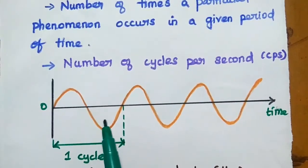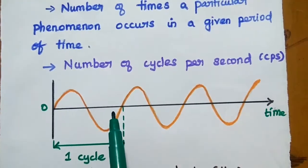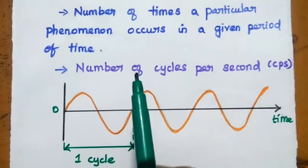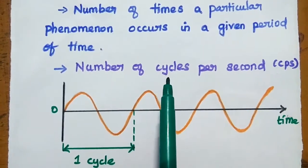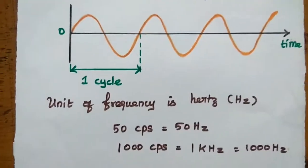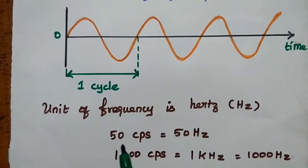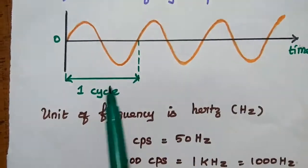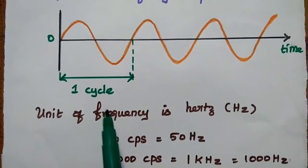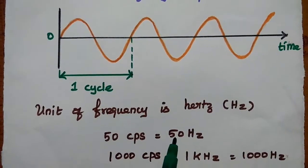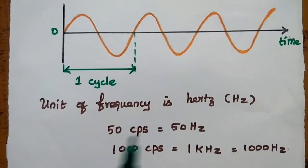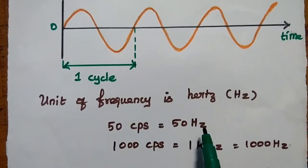One complete cycle is represented by a positive and negative half, and the same cycle repeats again and again. Frequency is the number of cycles per second. For example, 50 CPS means we generate 50 such cycles in one second — that is represented as 50 hertz, since the unit of frequency is hertz.